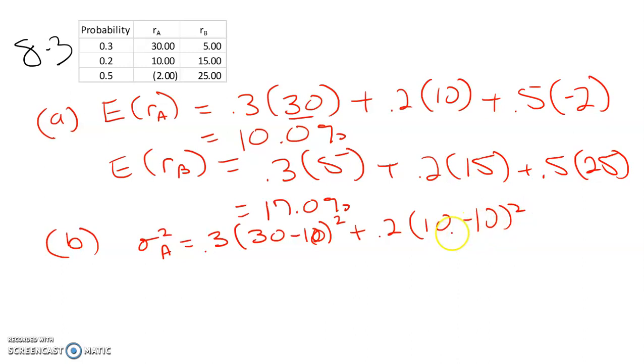which happens to be 0, so it'll cancel out. But 0.5 times negative 2 minus 10 squared. That answer is 192.